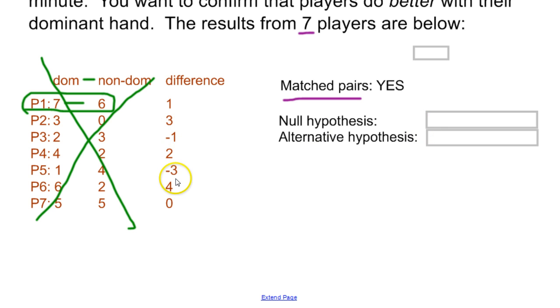We need to make a null hypothesis, though, to decide what to do with this list of data. And then an alternative to decide if we reached our conclusions or not. The null is always a statement of no difference. And in this case, no difference means literally difference equals zero.